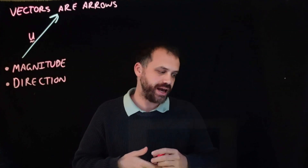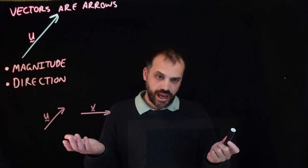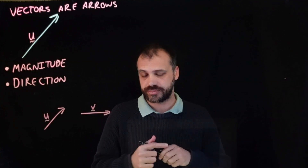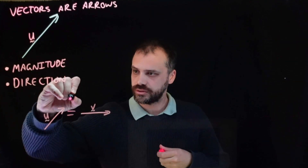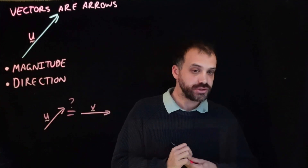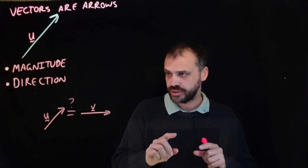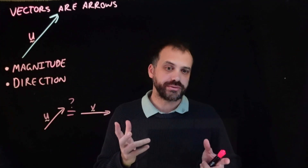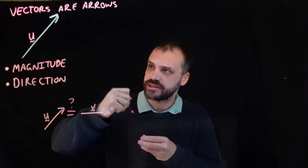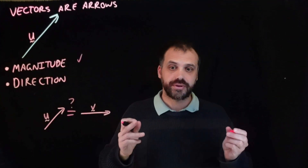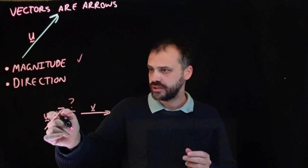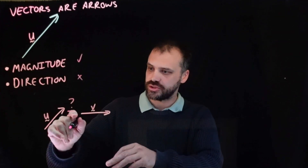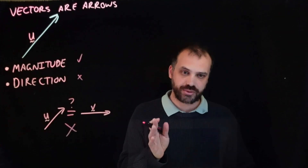So let's say I had two vectors. Are these two vectors equal? And the answer, of course, is no. Their magnitudes are equal — they're the same length — but their directions are different. So these two are not equal.